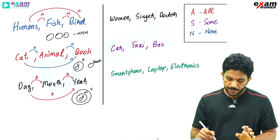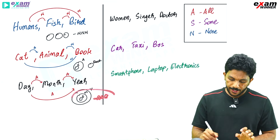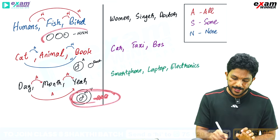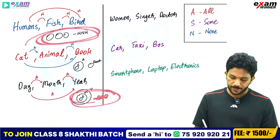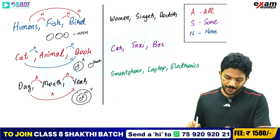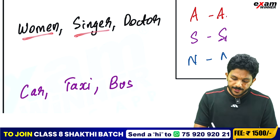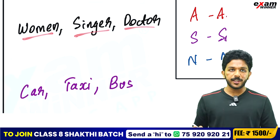This is A-A-A — All, All, All — which gives a standard nested result. Now the next example: Women, Singer, Doctor.